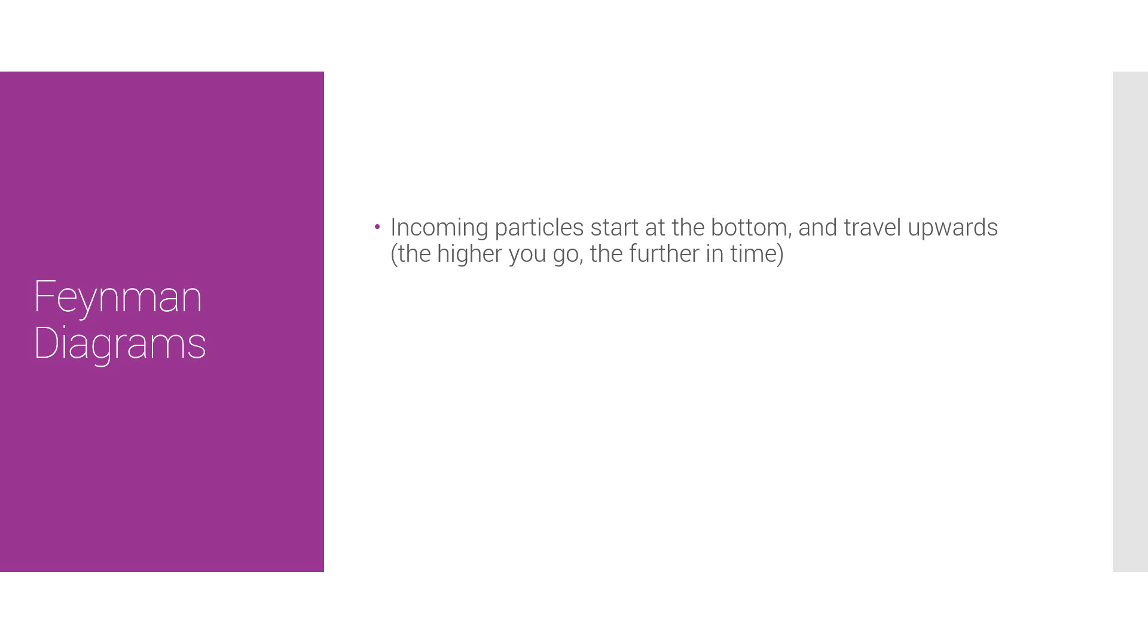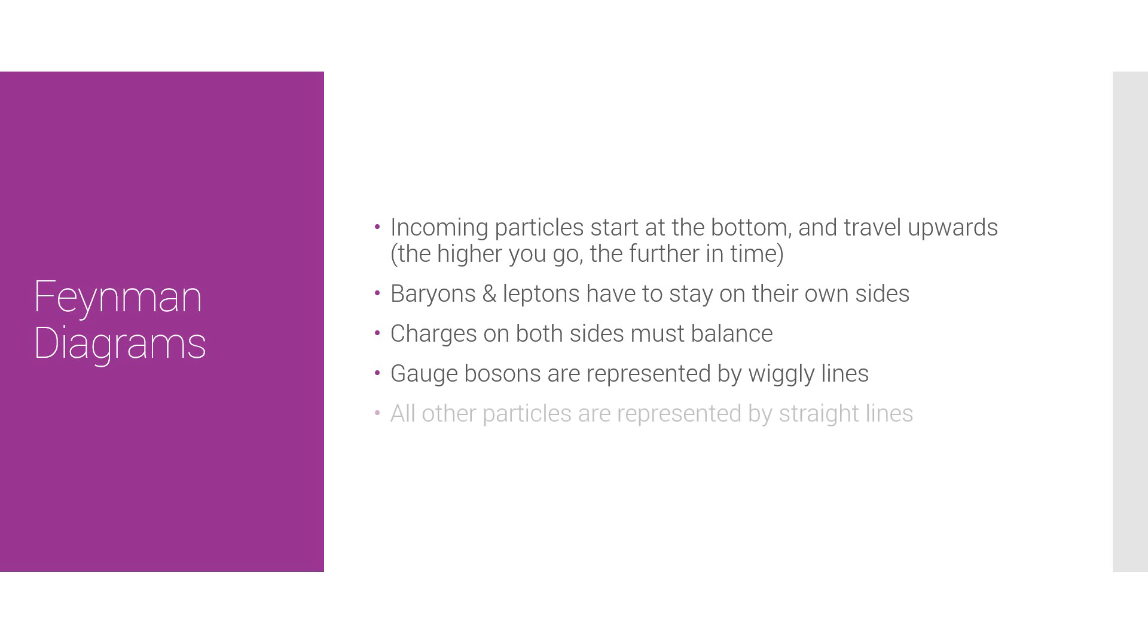Although he did have a couple of rules. Incoming particles start at the bottom of a diagram and they travel upwards. Time is represented upwards. Baryons and leptons have to stay on their own sides, they can't cross sides. Charges on both sides must balance. Gauge bosons are represented by wiggly lines, and yes, this is the proper technical term. You can say wiggly line in your exam. And all standard particles are represented by straight lines. So let's have a look at a couple of examples.